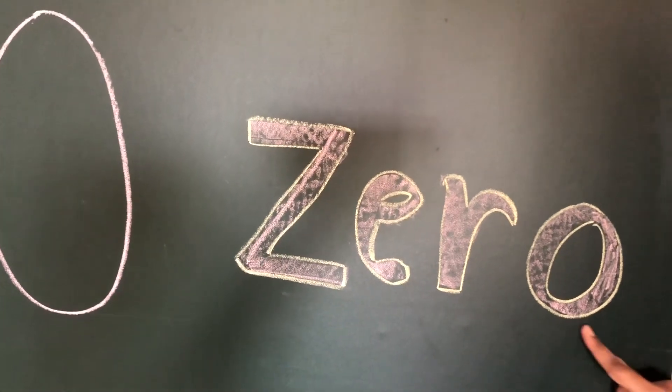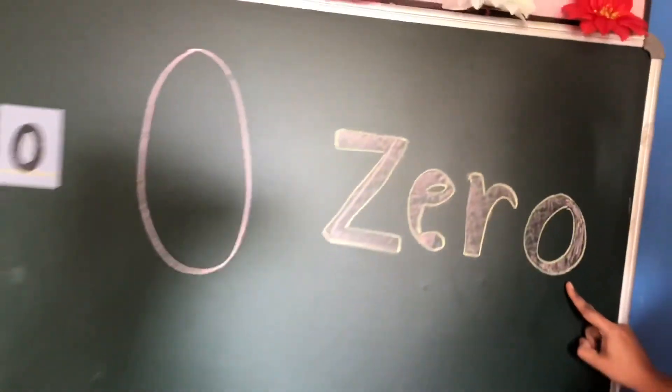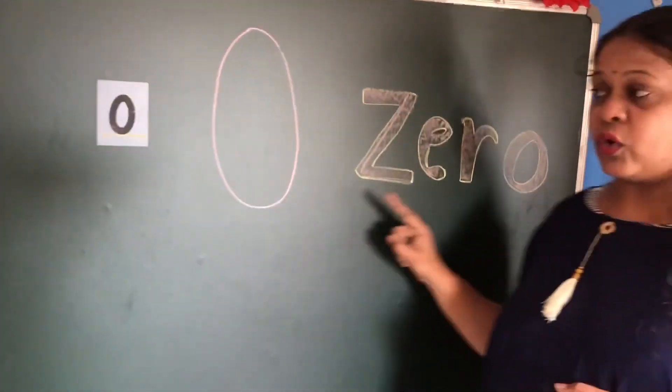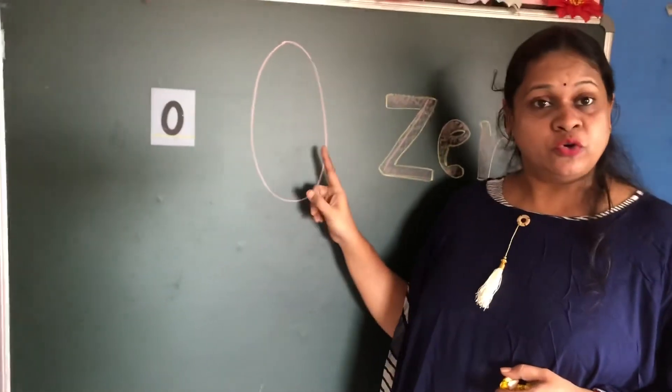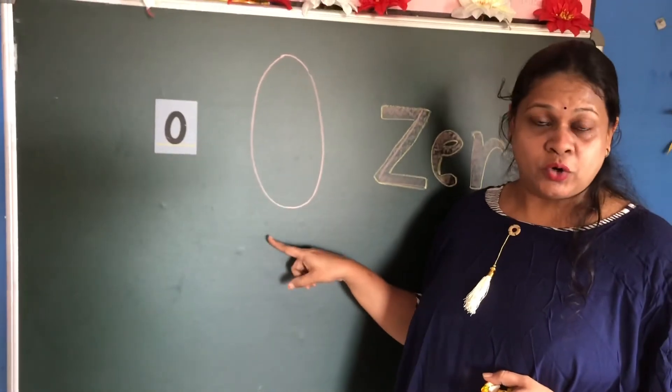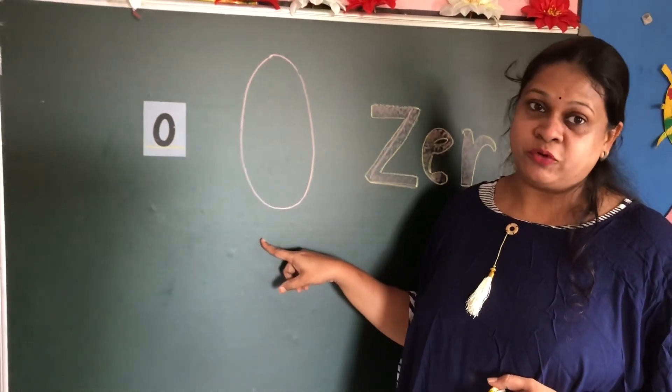Zero — Z-E-R-O. In this way, what you have to do is draw it in your notebook and practice.